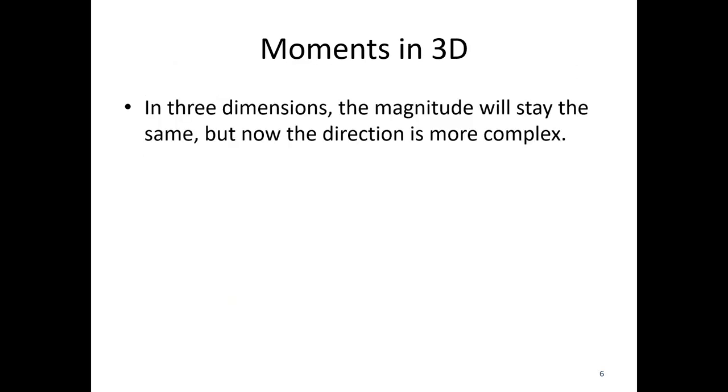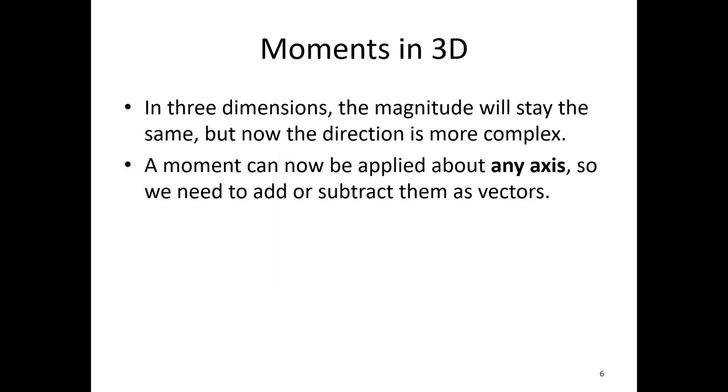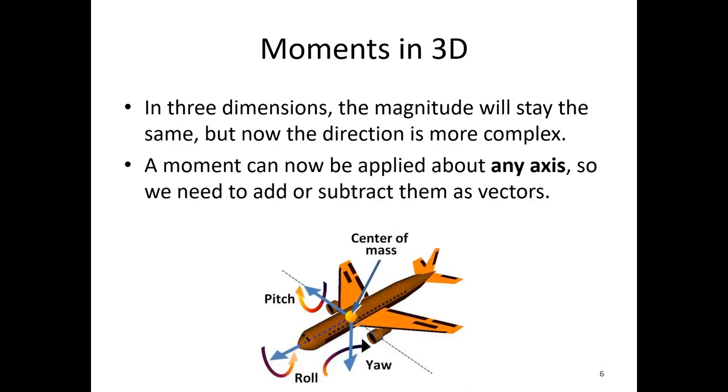Let's talk about this in 3D. In three dimensions, magnitude is going to stay the same, but now directions are more complex. That's because in 3D, we can rotate about any axis. So it's not just clockwise, counterclockwise. We have all sorts of directions.